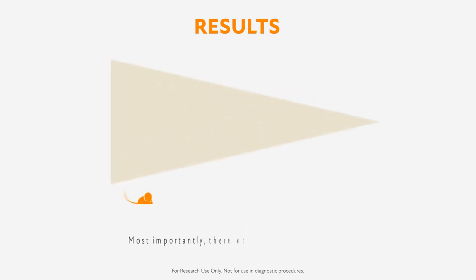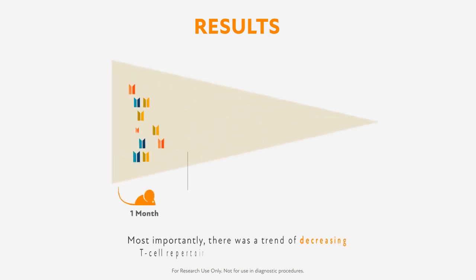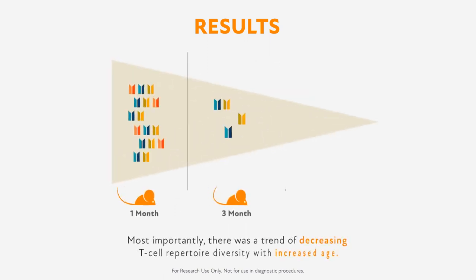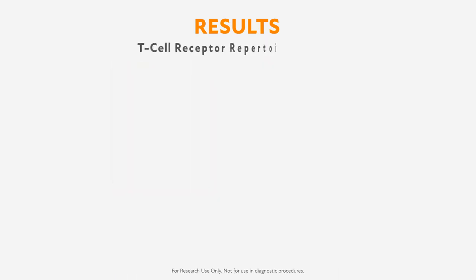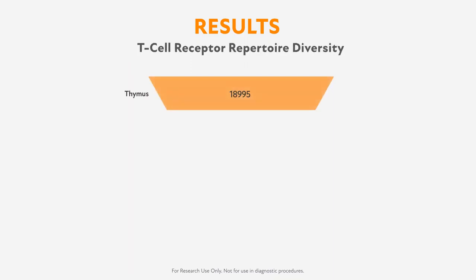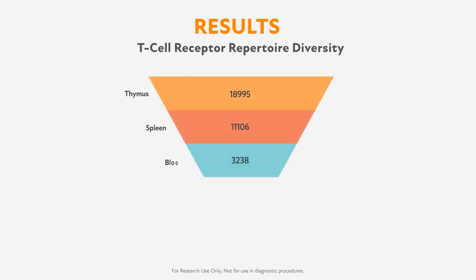Most importantly, there was a trend of decreasing T cell repertoire diversity with increased age. In comparison between mice, the thymus samples had the most overlap, followed by spleen, blood, liver, and lastly intestine tissue.